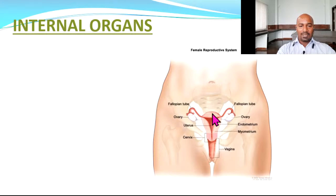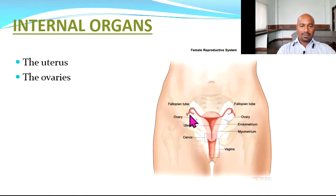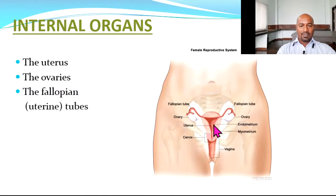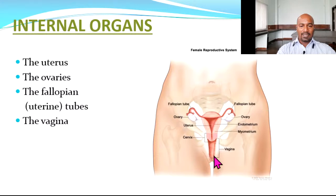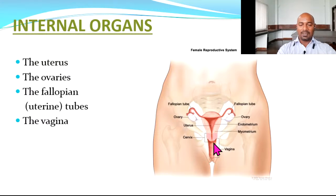Coming to the internal organs — these include the uterus, then the ovaries on either side of the uterus, then the fallopian tubes (also called uterine tubes) that go from the uterus up to the ovaries, and the vagina extending from the vestibule up to the cervix of the uterus.